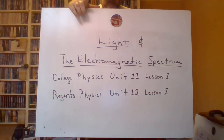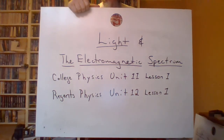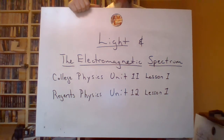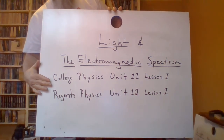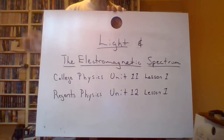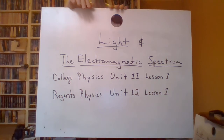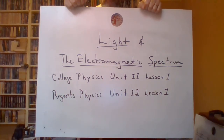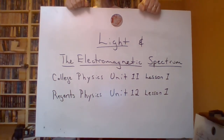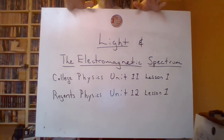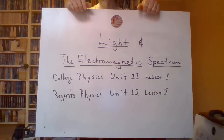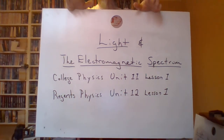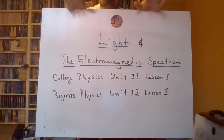You can't talk about light without talking about the electromagnetic spectrum. For the regents physics class, this is your unit 12, and this is our first lesson for this unit. This also happens to be one of my favorite units to teach, just because light in many ways is really, really cool to talk about.